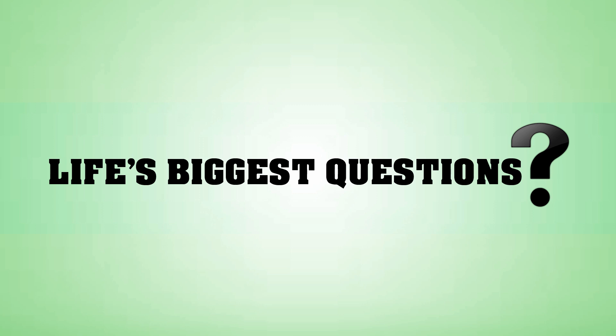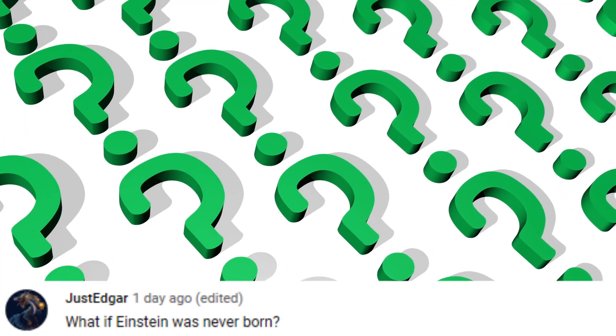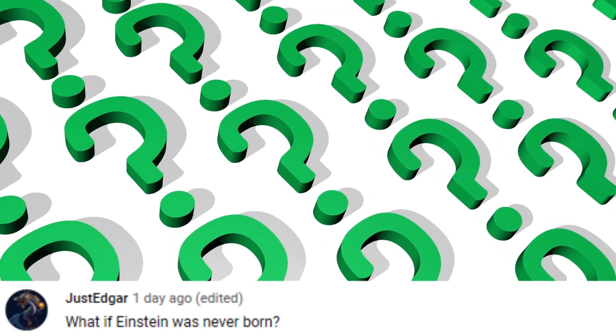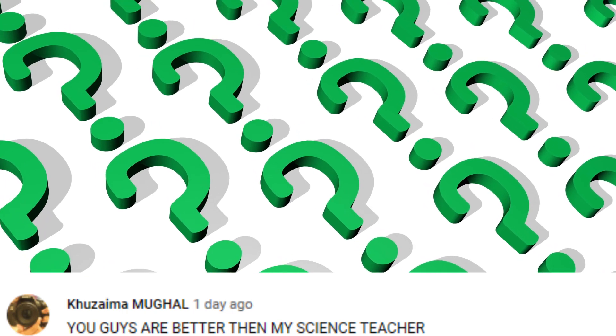These are from my last video, what if the sun disappeared for 5 seconds. Mr Green says wow, really amazing content and great video. Thank you very much, I am glad you enjoyed it. Just Edgar asks what if Einstein was never born. This is actually a very good question, I feel like a lot of things would be different. Maybe it's even a future topic on this channel. The mysterious youtuber asks what if everyone woke up as an almond. I would probably cover myself in chocolate and eat myself. Kusama Mughal says you guys are better than my science teacher. I mean, I'm not mad about that. Chude exist asks what if my socks were tongues. I am not sure but that puts a really weird image in my head.